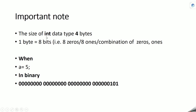An important note: suppose the size of an integer in Python is 4 bytes — that means 32 bits in total, since 1 byte equals 8 bits. So if a equals 5, its binary representation 101 would be preceded by 29 zeros to fill all 32 bits. This is just an assumption to understand how integers are stored in memory.